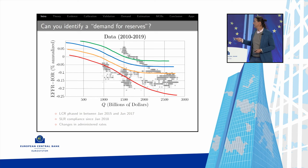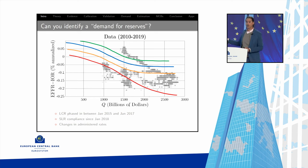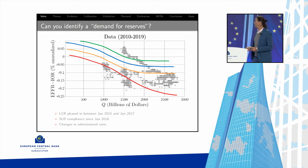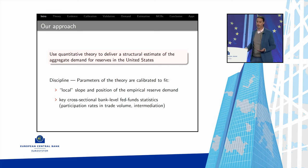In the last three editions of this conference, two papers tried to estimate the demand for reserves using raw econometrics with very little or no theory. We're going to take a different approach — not reduced-form atheoretical econometrics, but bringing theory to bear.